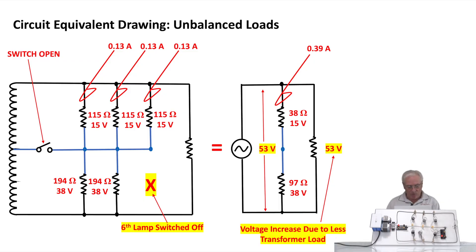Now the next drawing shows the unbalanced load. You can see I have a big X where we switched out that sixth lamp, and it changed the ohm configuration and the voltage balance. When you do the math, the parallel connections on the top give 38 ohms now and 15 volts. On the bottom you have 97 ohms, so you're dropping more voltage across there and you ended up with 38 volts. It's a dramatic difference.